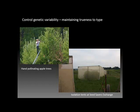In order to reduce genetic variability, certain crops are grown in isolation chambers, designed to limit and reduce the amount of pollination done by insects in order to reduce the amount of genetic variability between plants.